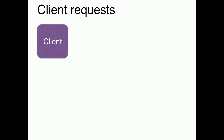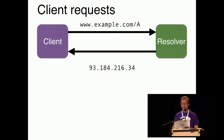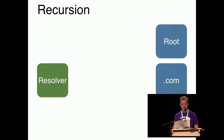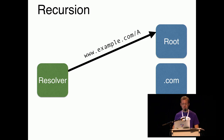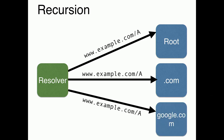Let me just go through this real quickly. This should be familiar to all of you. This is the normal transaction flow between a client — like a mobile phone, a laptop, whatever — and a resolver. A question goes out, an answer comes back. But obviously on the resolver side a lot of magic happens. The resolver goes to the root, asks for the name you asked for, and eventually goes to google.com to get example.com.